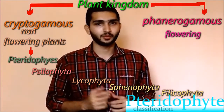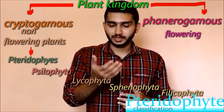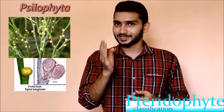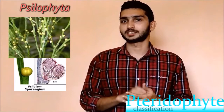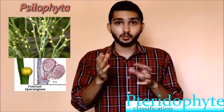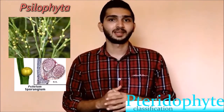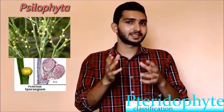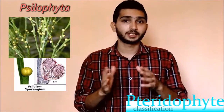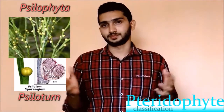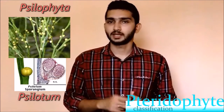Now let's talk about Psilophyta. In this type, vascular tissue is present only on the stems. The stems are modified into rhizoids, and these rhizoids are helpful for absorption of water and minerals. Spores are formative and these plants lack leaves. Spores are mainly homosporous type. The example for Psilophyta is Psilotum.